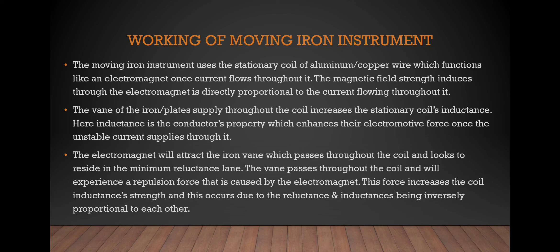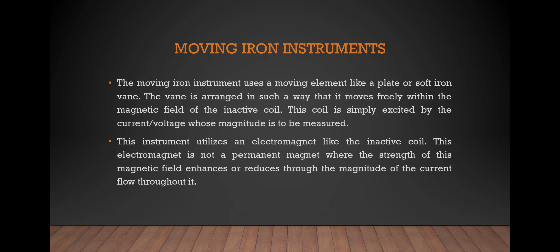The vane of the iron plates supply throughout the coil. It increases the stationary coil inductance. So it enhances their electromotive force once the unstable current supplies through it. The electromagnet will attract the iron vane which passes through the moving path.